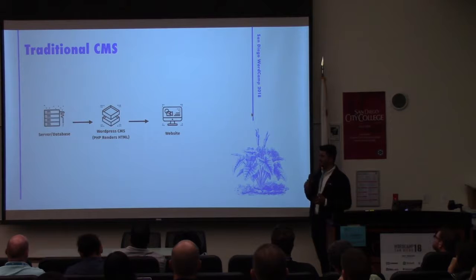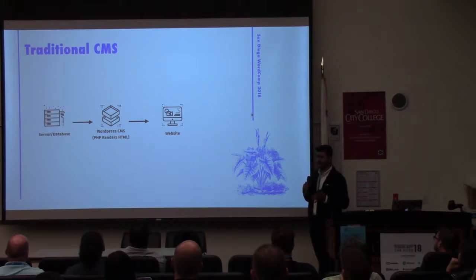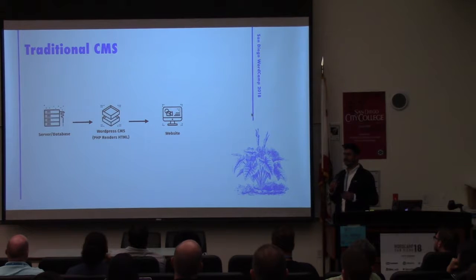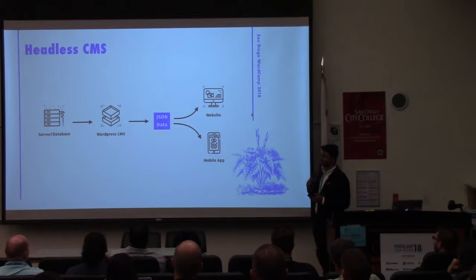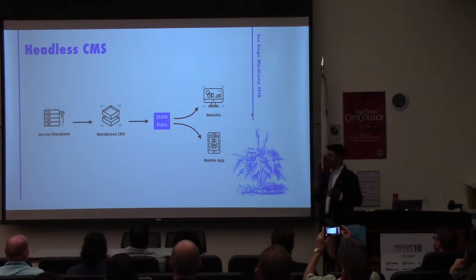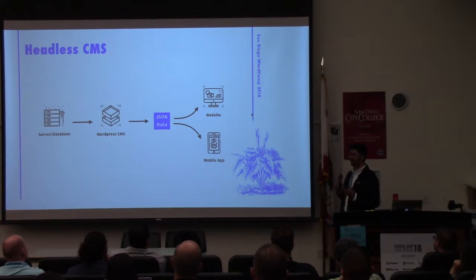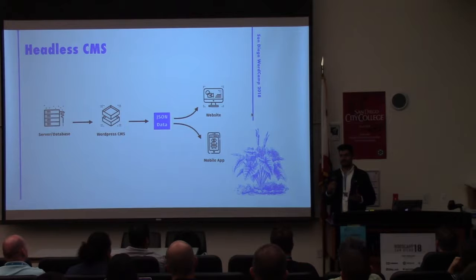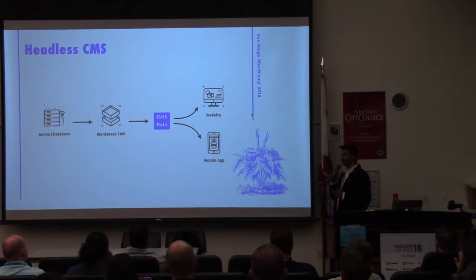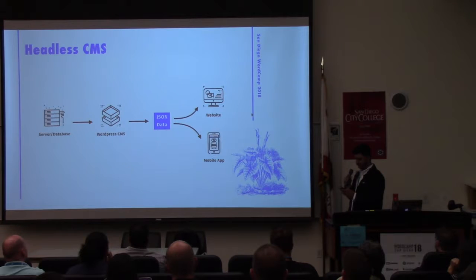In a traditional CMS, you have your server and database, then WordPress running PHP, and then PHP renders HTML and shows that to you on the website. With a headless CMS, you still have your server and database, and WordPress uses PHP to handle logic and spit out data — in our case as JSON via a REST API. We can then use that data to create a website, a web app, or even a mobile app. For instance, Twitter, Quora, and Medium all use the same data set across their websites and their mobile apps.